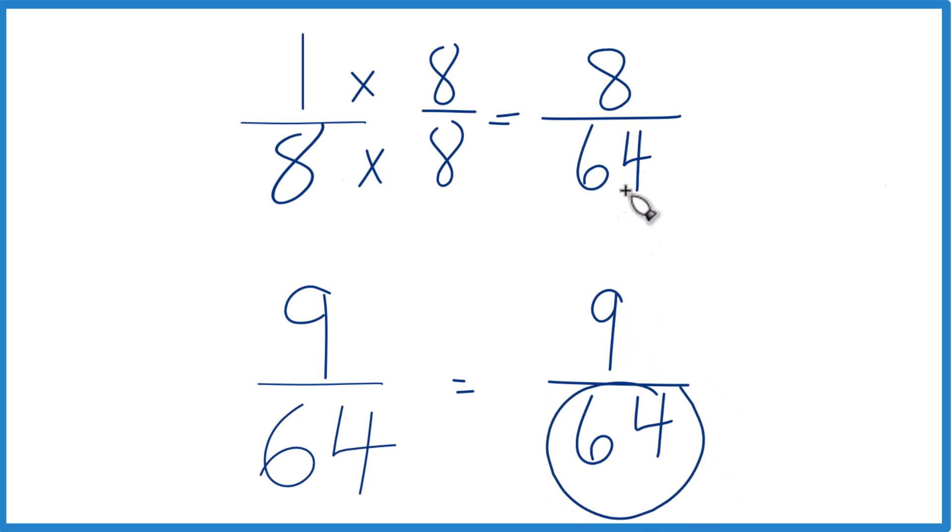Now same denominator, let's compare the numerators. 9, that's greater than 8. So 9/64ths, that's greater than 8/64ths. Only by 1/64th, not a lot, but it's still greater.